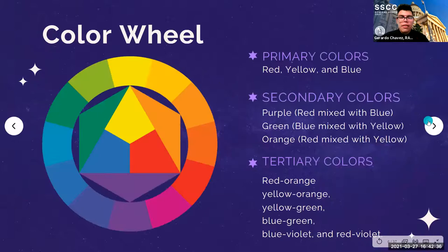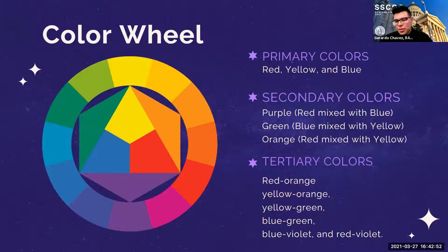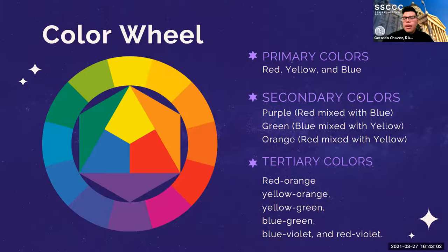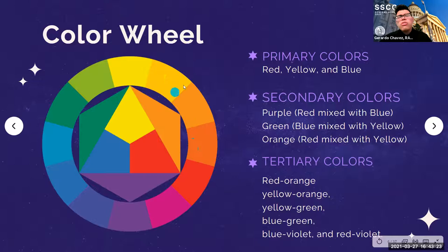We're going to start with the color wheel — you've probably learned about it in kindergarten and we're just going to go through the basics. The primary colors are red, yellow, and blue, as you can see right here in the middle of the color wheel. Then we have secondary colors, formed by mixing primary colors with each other. So we have purple, which is red mixed with blue; green, which is blue mixed with yellow; and orange, which is red mixed with yellow. But also, if you look at the color wheel, there are different types of shades. As colors get closer to each other, they start sharing commonalities — and that is what we call tertiary colors.